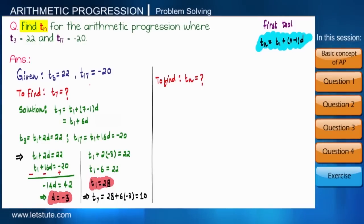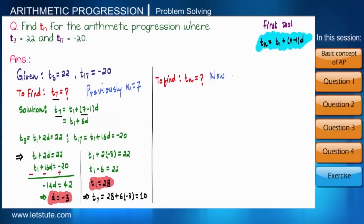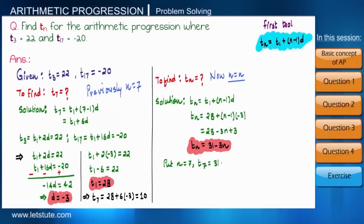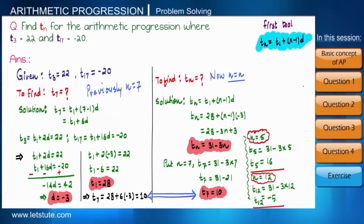Now suppose we are asked to find tn as a general expression instead of t7. Previously we substituted n equals 7; now we simply keep n as it is. With t1 equals 28 and d equals minus 3, the formula gives tn equals 31 minus 3n, which is a general expression in terms of n. To verify, putting n equals 7 gives t7 equals 10, which matches. You can substitute any value of n to get the corresponding term.